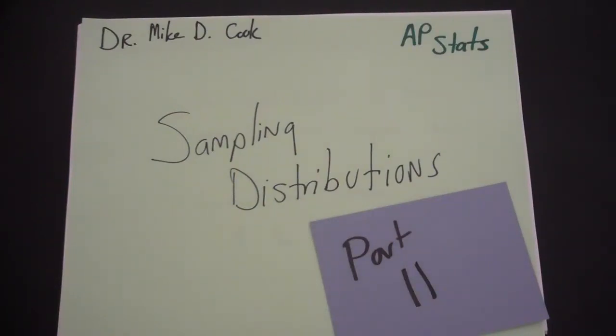This is the second video of a series on sampling distributions, focusing on the sampling distributions of the population proportion and population mean.